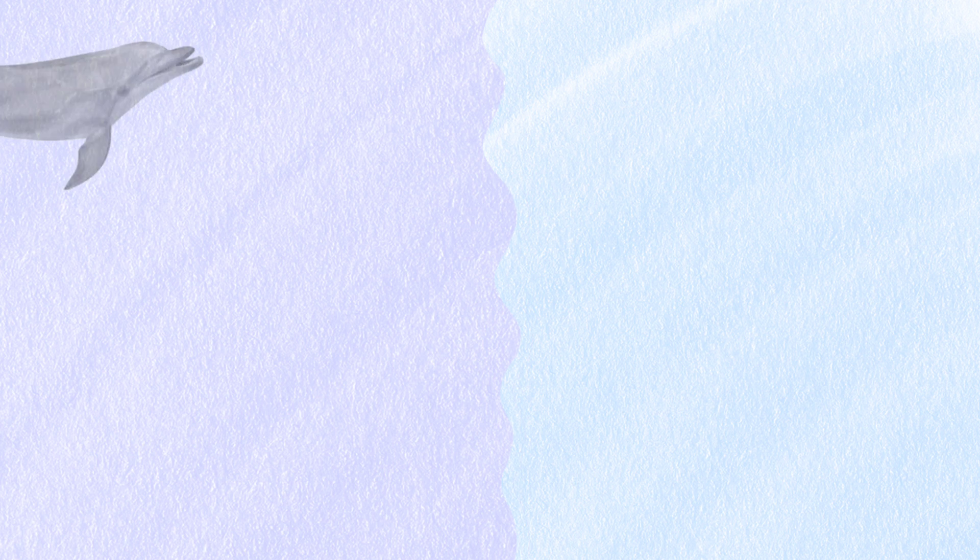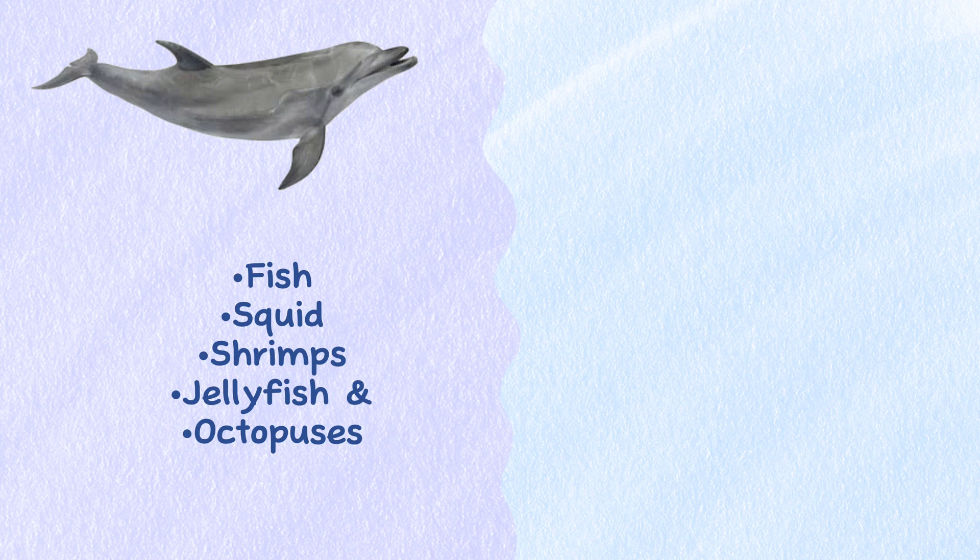Diet. Dolphins eat a variety of fish, squid, shrimp, jellyfish and octopuses. The types of fish and other creatures dolphins eat depend on the species of dolphin.